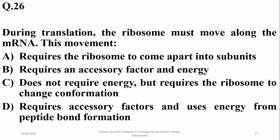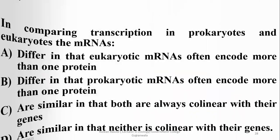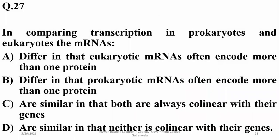Number 26: during translation, the ribosome must move along the messenger RNA. This movement requires energy, and beta is the right option — it also involves some helper factors as well. In comparing transcription in prokaryotes and eukaryotes, messenger RNA differs in that prokaryotic messenger RNA often encodes more than one protein, whereas eukaryotic messenger RNA is monocistronic — forming only one protein from one messenger RNA.